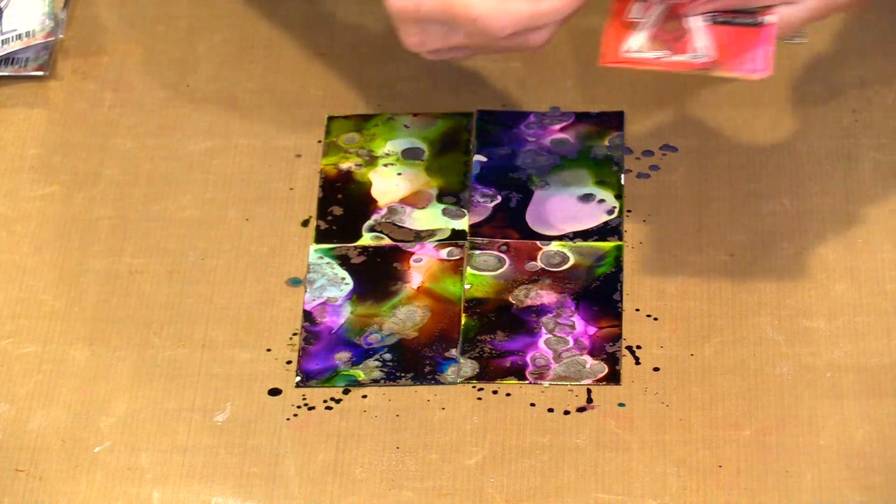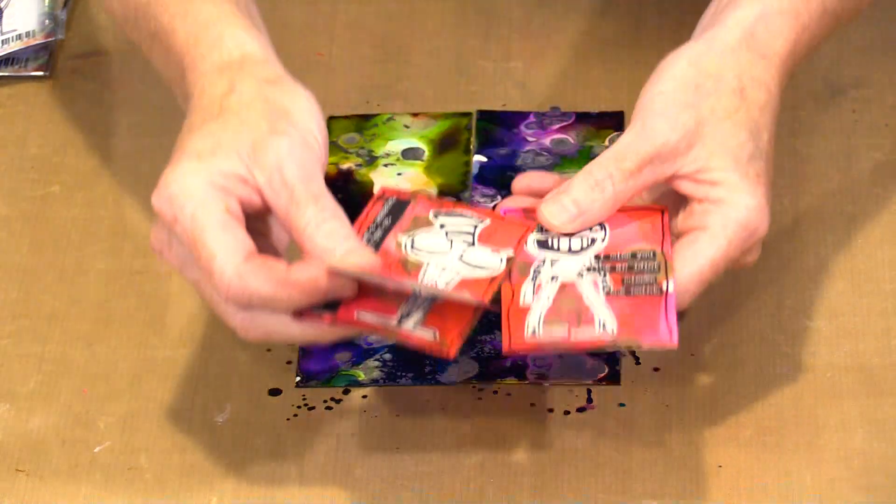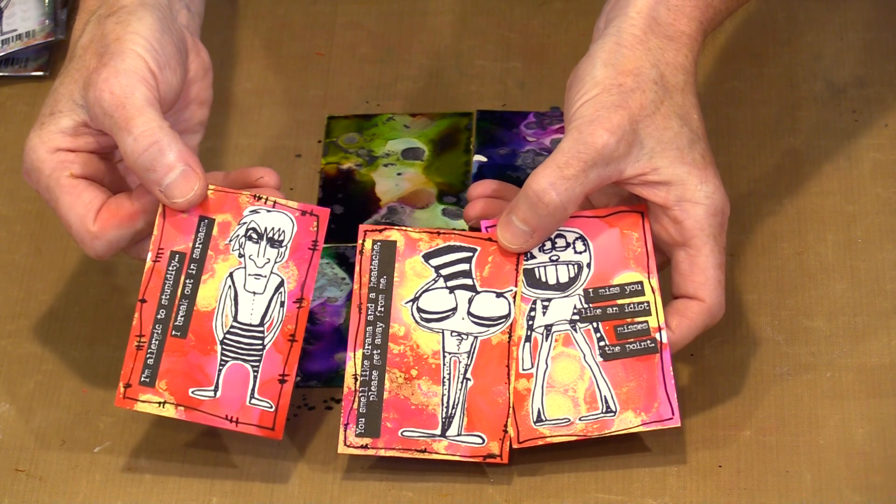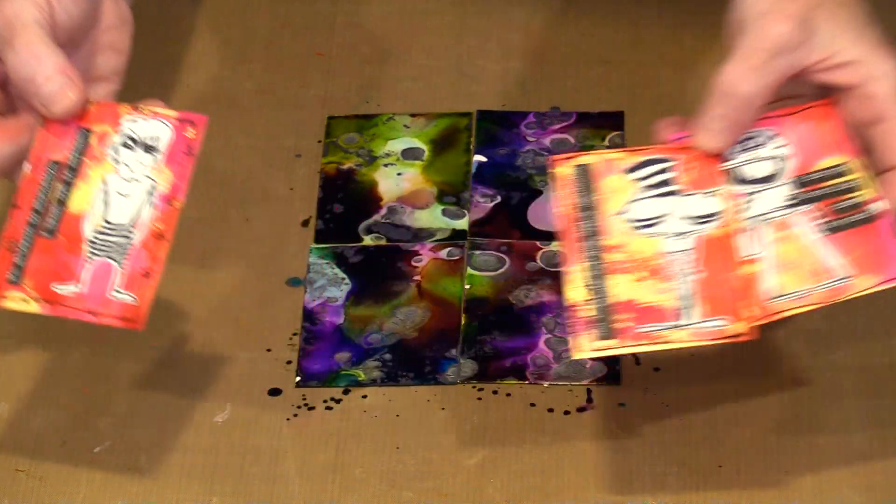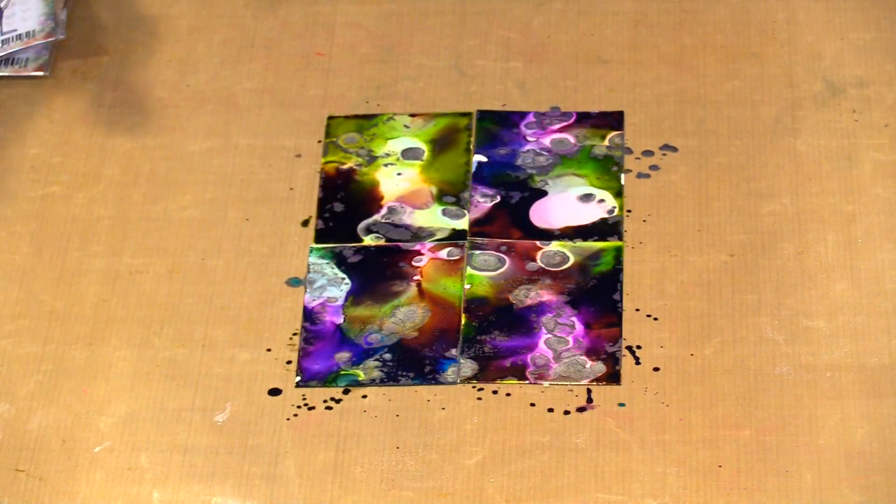And then I used some of Tim Holtz's small talk rather snarky stickers. But I didn't even bother to color these in. The background is busy enough and I felt like the white on the black and the white on that background worked really really well. So super simple to do.